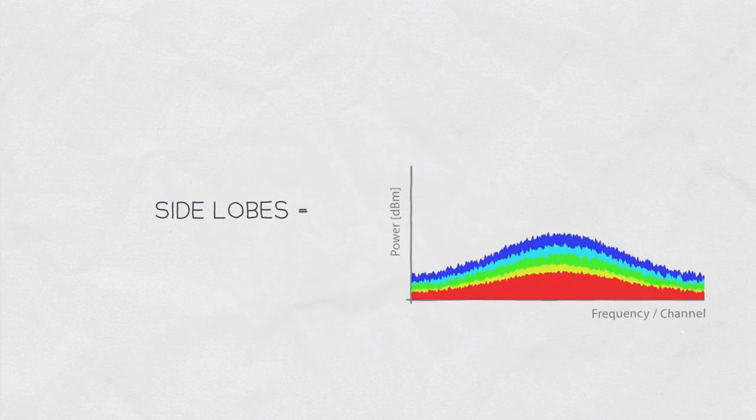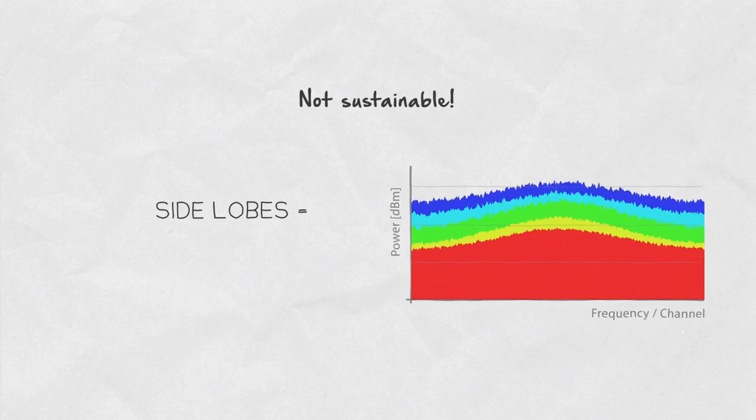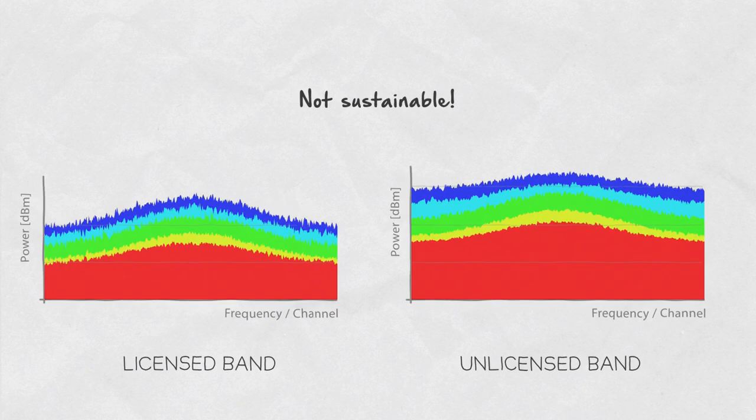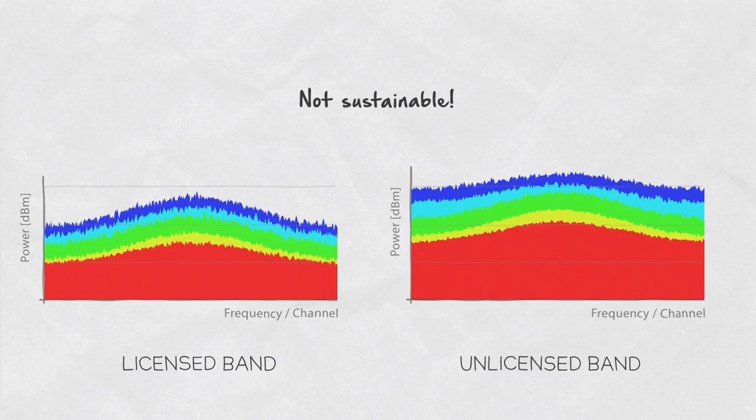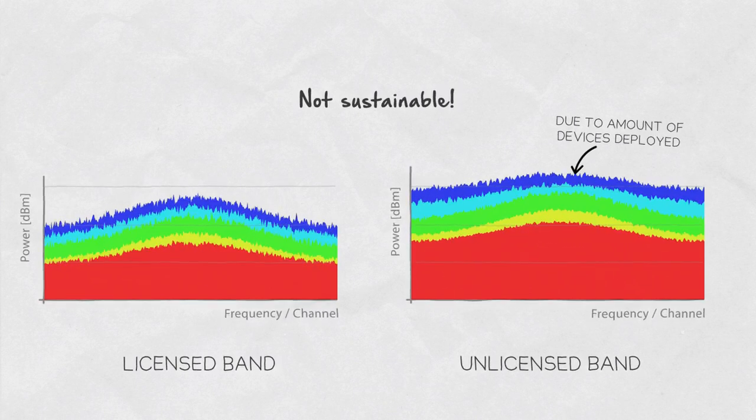Side lobes increase the noise level and therefore should be avoided at all costs to ensure sustainable use of the spectrum. Whether the spectrum is licensed or unlicensed, it doesn't matter. However, the point of no return is achieved quicker in unlicensed bands due to the uncontrollable amount of devices deployed.